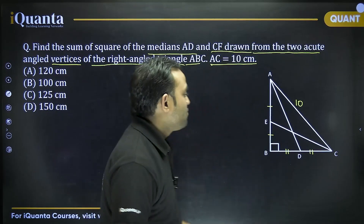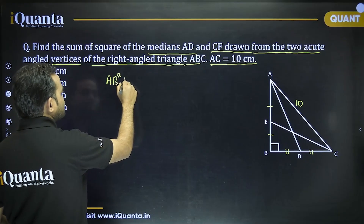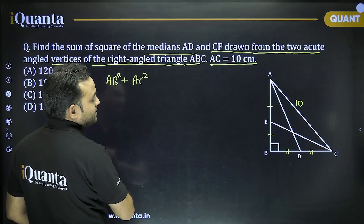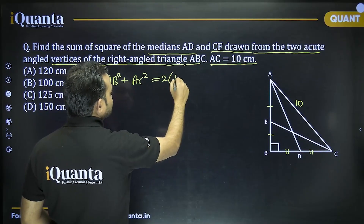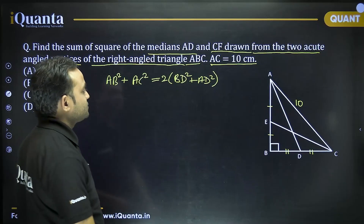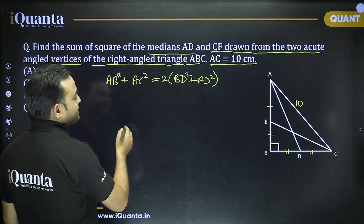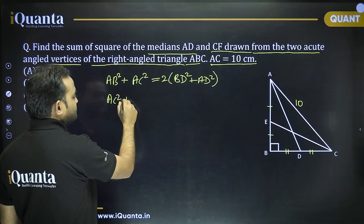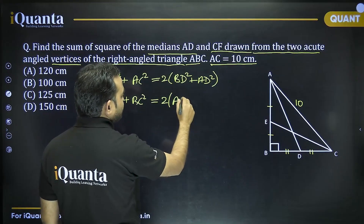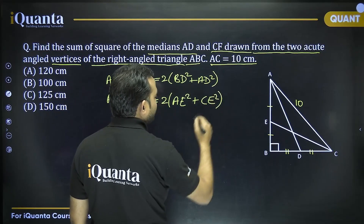Apollonius's theorem states: with respect to median AD, AB² + AC² = 2(BD² + AD²). Similarly, with respect to median CE, AC² + BC² = 2(AE² + CE²).